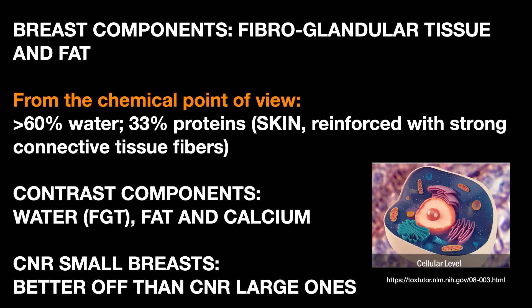The best components are fibroglandular tissue and fat. By a chemical point of view, more than 60% is water, which corresponds to fibroglandular tissue, with about 33% of proteins that are in the skin, reinforced with strong connective tissue fibers. It is important for positioning and for compression too, as we will see later. The components which contribute to the contrast are actually three: water, fat and calcium. The contrast-to-noise ratio varies depending on several aspects, also on the breast volume. It is better in small breasts.